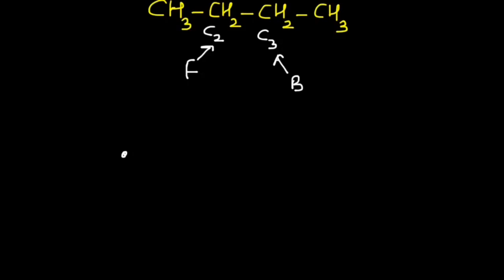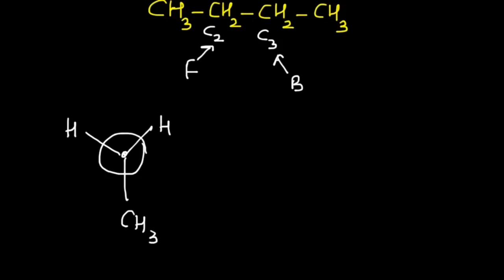On the front carbon I have three groups: two hydrogen atoms (H, H) and one CH₃ group. On the back carbon atom I also have three groups: two hydrogen atoms and one CH₃ group. So this is the Newman projection for normal butane.